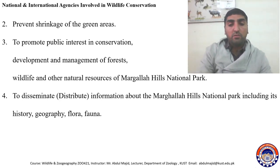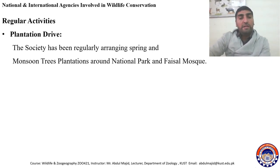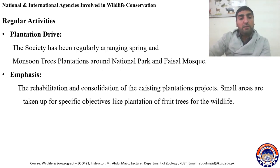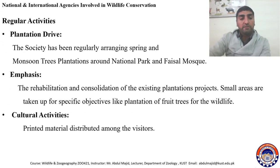The regular activities of the Margalla Hills Society include plantation drives. The society has been regularly arranging spring and monsoon tree plantation around the national park and Faisal Mosque. Their activities also include rehabilitation and consolidation of existing plantation projects, with small areas taken up for specific objectives like plantation of fruit trees for wildlife, as well as cultural activities and distribution of printed material among the public.